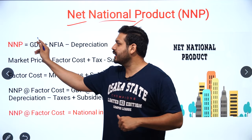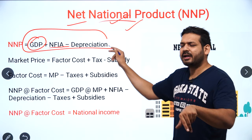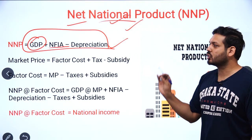The formula for NNP: NNP equals GDP plus Net Factor Income from Abroad, minus Depreciation. So combining both adjustments — net factor income from abroad and minus depreciation — gives us NNP.